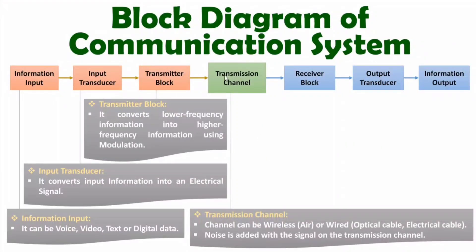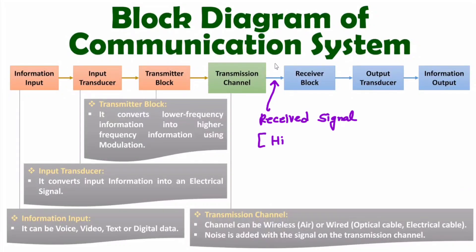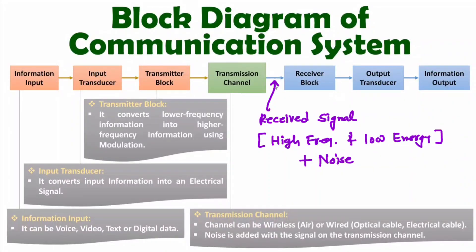One should know that during transmission, noise gets added to the signal. We transmit high frequency, higher energy information via the transmission channel, but after the channel the received information has additional noise due to the channel. For example, in a wireless channel, extreme noise gets added. Also, for long distance communication, the received signal will have low energy — the frequency will be high but the energy will be low at the receiver side.